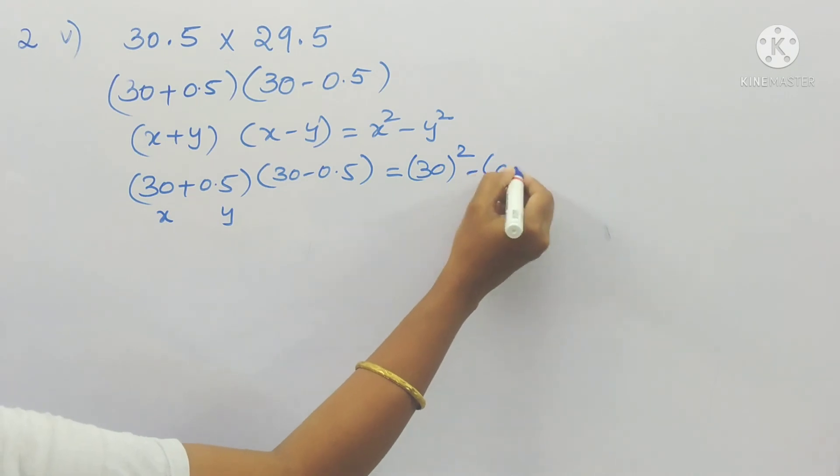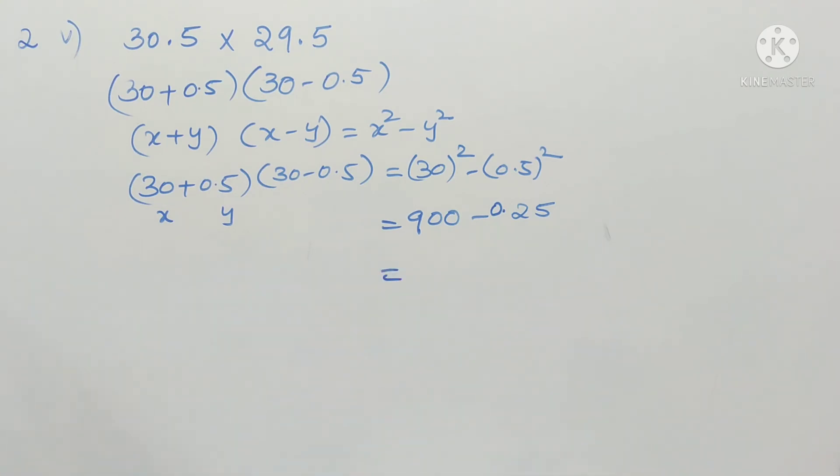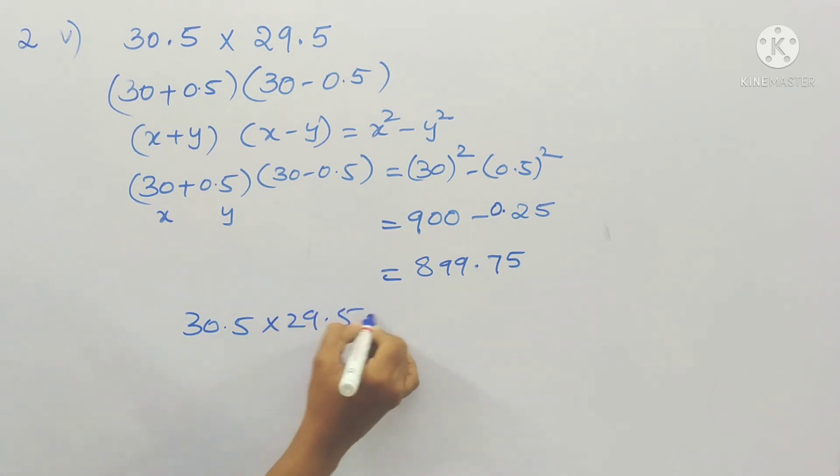So just by comparing with the above identity, we can write in the place of x, 30 whole square minus 0.5 whole square. 3 square is 9 and 1 zero is there, so 2 zeros minus, we know 5 square is 25. So we have to put the decimal point after two digits because 0.5 into 0.5 is 0.25. So first 900 minus 1 how much? 899. That 1 minus 0.25 is 0.75. So 899.75 is the answer for this.